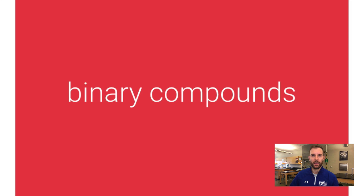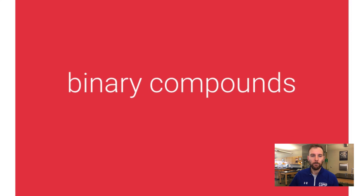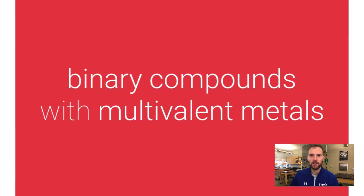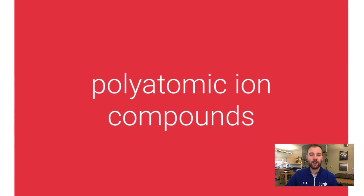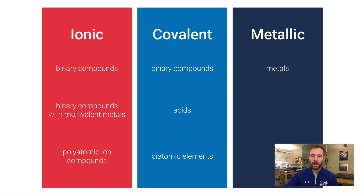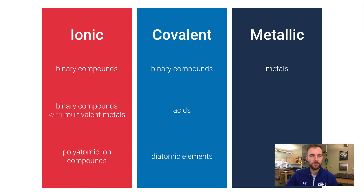There are simple binary ionic compounds, but then there are more advanced ones involving multivalent metals — metals that have multiple possible charges — which really pop up in the transition metal area. The third area in ionic bonding is polyatomic ion compounds. A polyatomic ion is a grouping of atoms that overall has a charge. That rounds out ionic bonding.